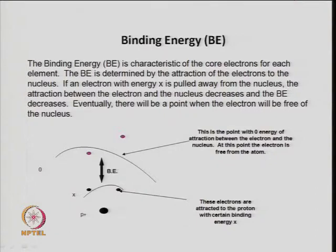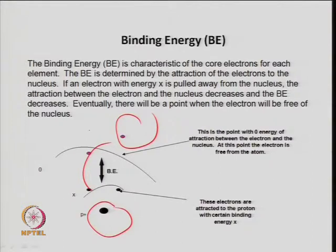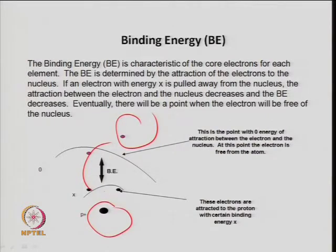What is binding energy? The nucleus is at the center and the core electrons are around it. The energy required to release the electron from there and take it to the outermost shell is related to the material property — that is the chemical composition of the metal. Binding energy is the characteristic of the core electrons and for each element it will be different. It is determined by the attraction of the electrons to the nucleus.